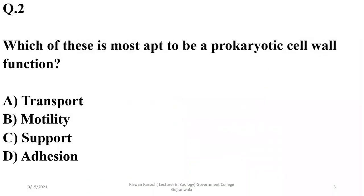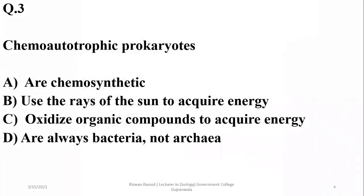Which of these is most apt to be a prokaryotic cell wall function? The prokaryotic cell wall is basically responsible for support, so the right option is Charlie. Chemotrophic prokaryotes are chemosynthetic and they do not use sunlight to acquire energy; they make use of different chemicals to synthesize their organic food.